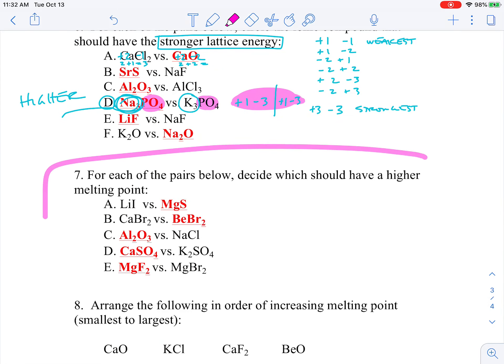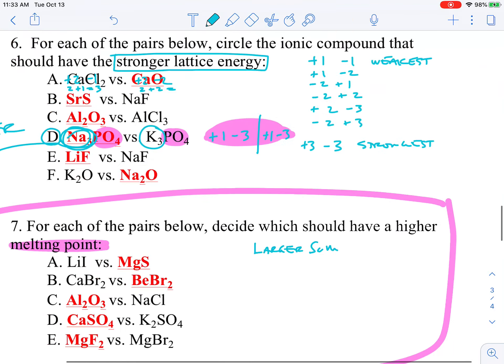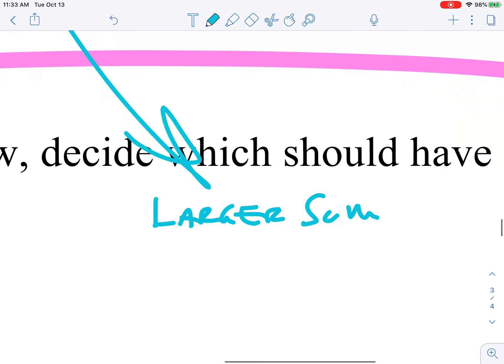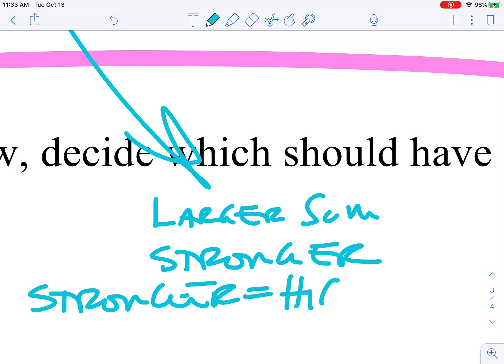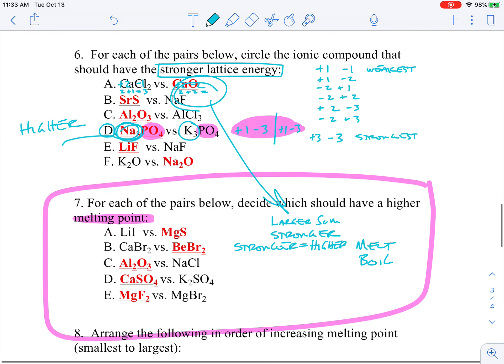Now when we get to this question, this talks about melting point. So the general rule of thumb is larger sum. And by sum, I mean adding the absolute values like we did before. So that means the larger the sum is the stronger and stronger equals higher melting point and higher boiling point. So those are interchangeable terms. So it's the same exact questions as we did before.